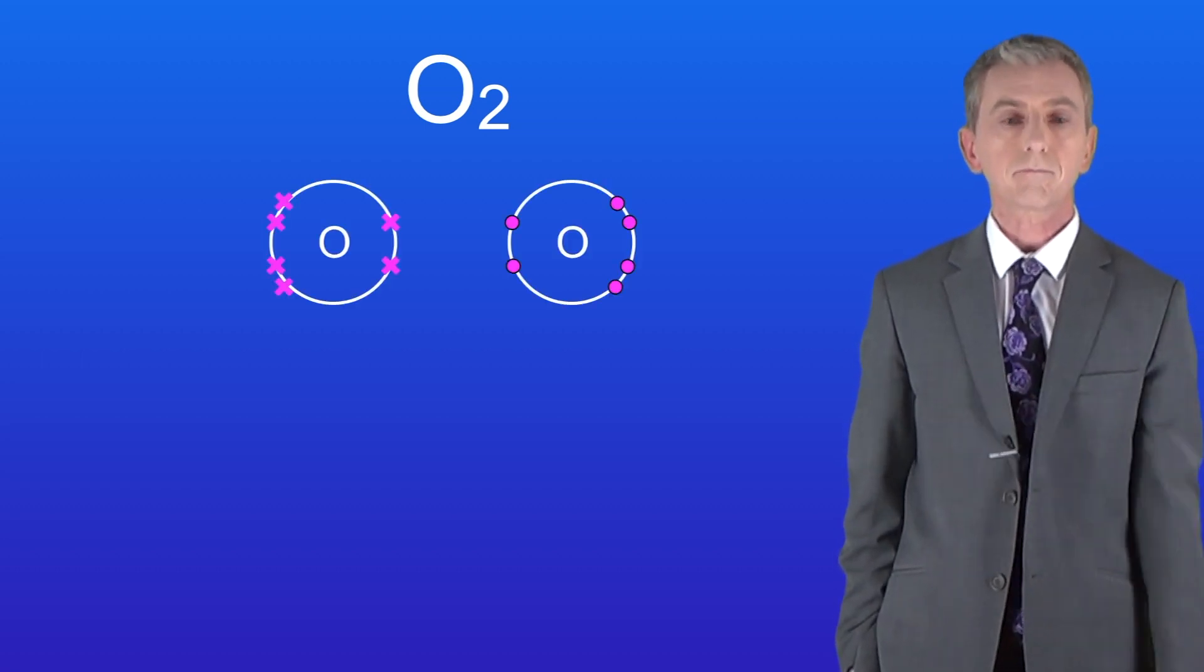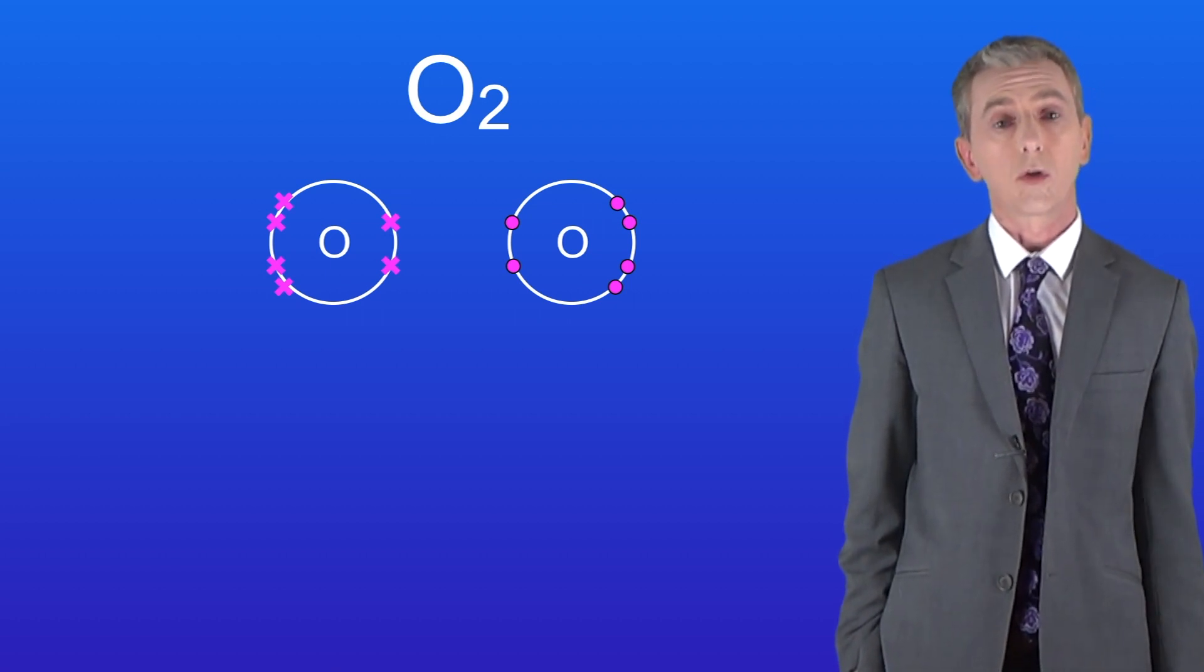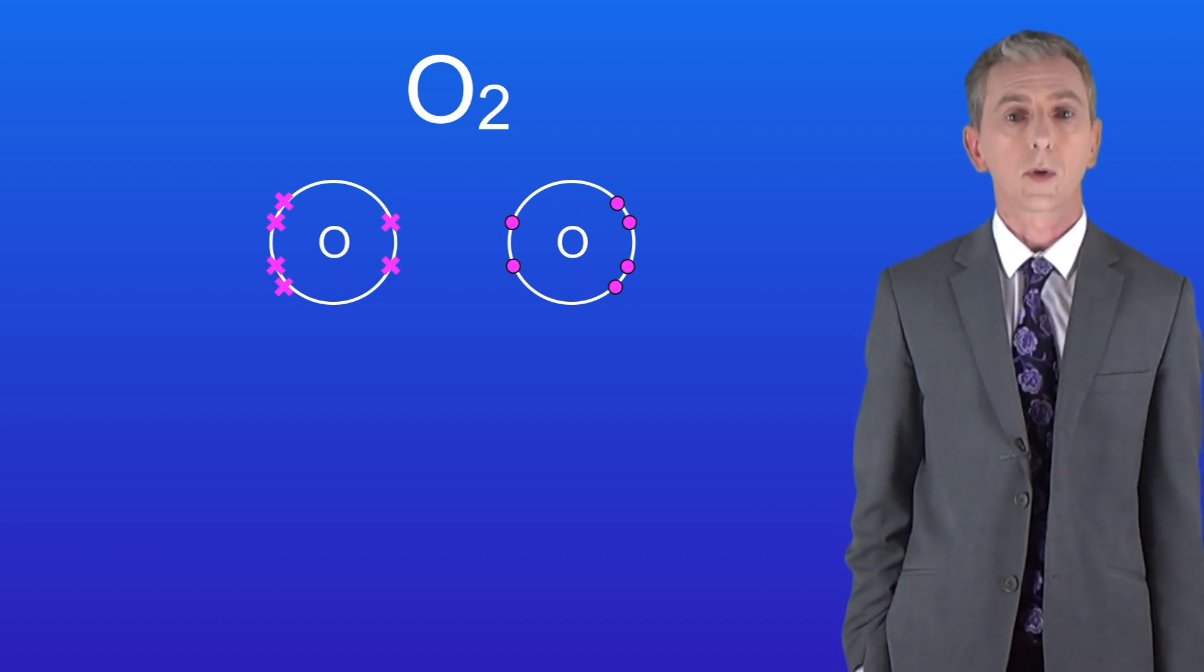Oxygen atoms have got six electrons in their outer energy level and I'm showing you them here. I'd like you to pause the video now and try to draw the covalent bonding in an oxygen molecule.